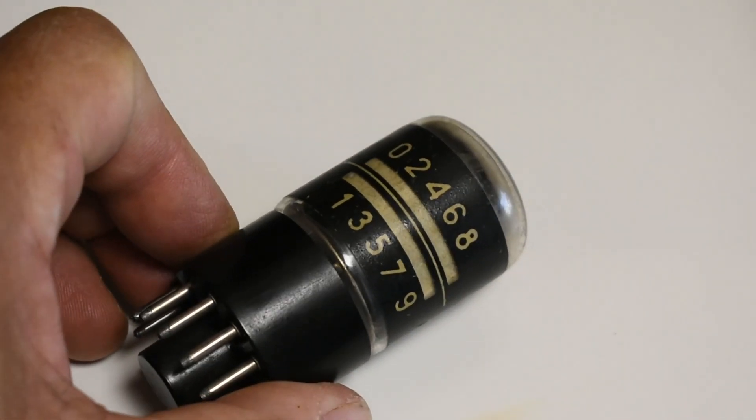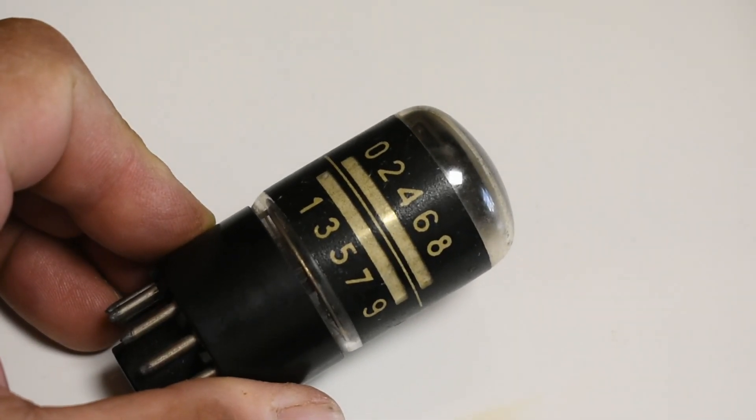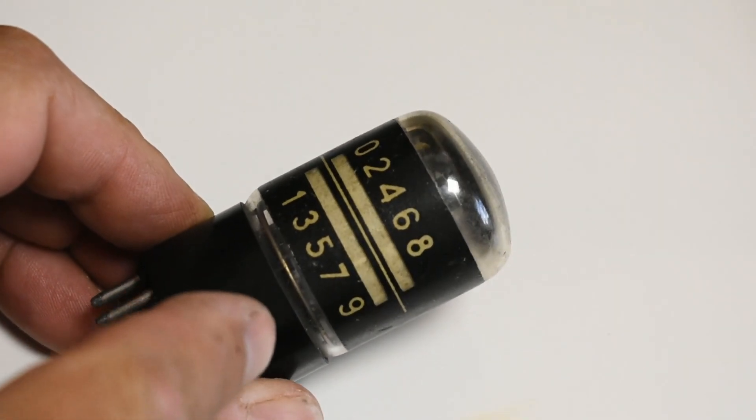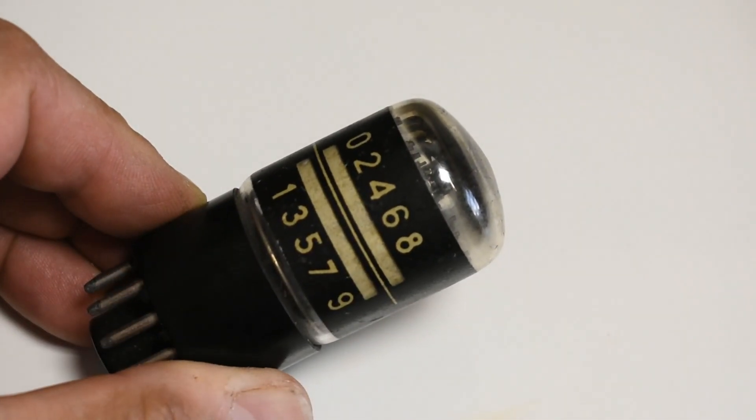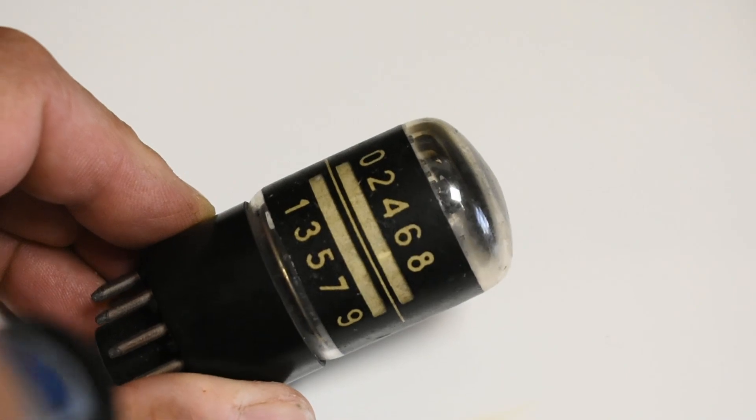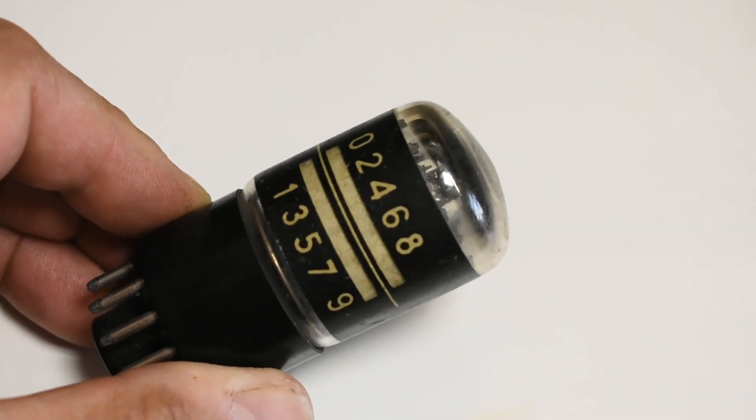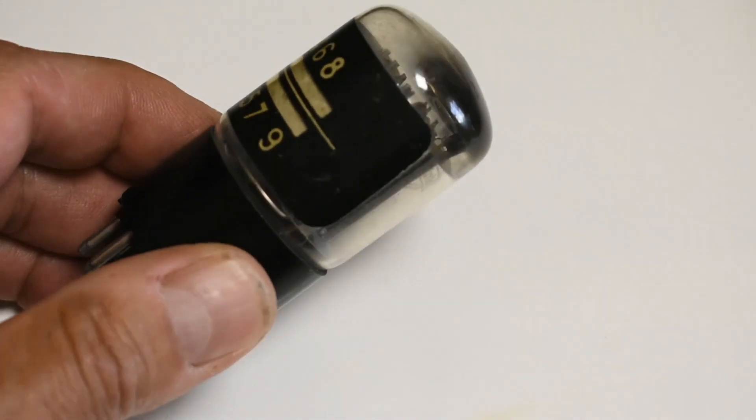So there are other counting devices from the past. This is the even rarer electron counting device. This one works like a small cathode ray tube. This is a fluorescent screen under the digits basically and the beam can be pointed to basically fluoresce the screen and indicate the number.